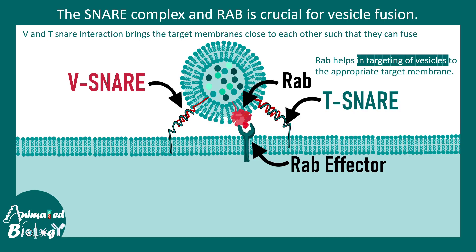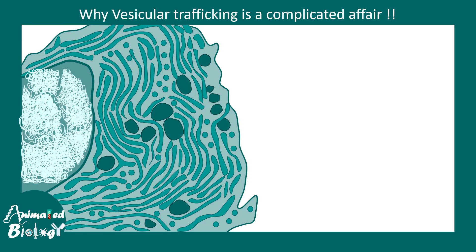RAB helps in tethering the vesicle by binding to the RAB effector present in the target membrane. So there are two component interactions: one is SNARE-mediated interaction, and the other is RAB and RAB effector-mediated interaction. These two interactions together ensure that vesicle fusion happens in a specific manner to a specific membrane.